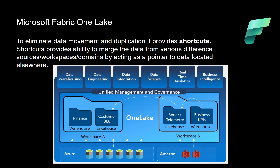Another very important feature of OneLake is that it helps eliminate data movement and duplication, and it provides a feature called a shortcut. Imagine you have workspace A and workspace B — people in workspace A want to access data from workspace B. They don't need to copy the data or do any data movement. They simply create a shortcut — for example to a 'service telemetry' dataset in workspace B. This shortcut acts like a pointer to the data located in workspace B without doing any data movement.